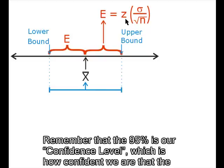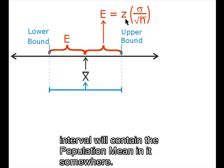Remember that the 95% is our confidence level, which is how confident we are that the interval will contain the population mean in it somewhere.